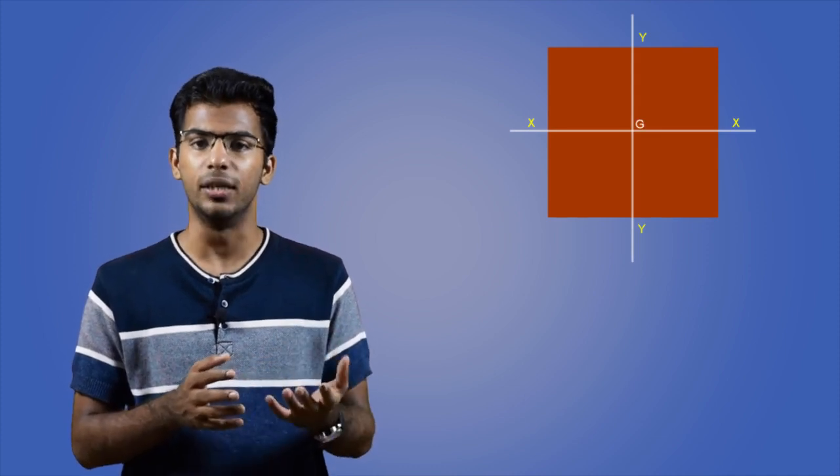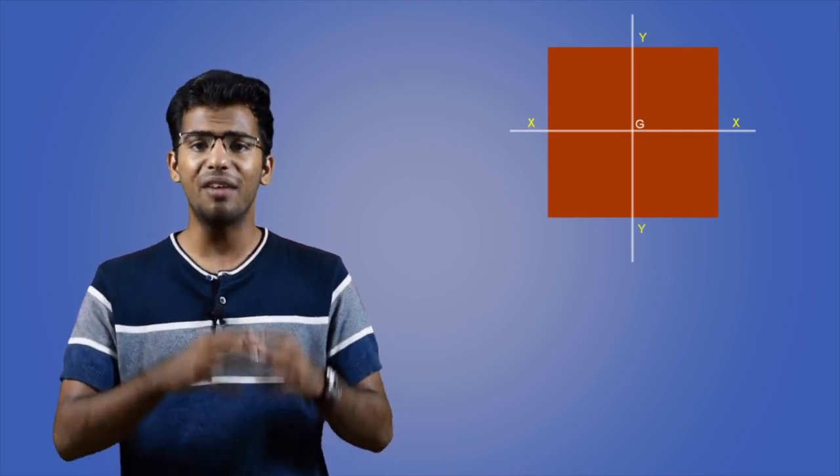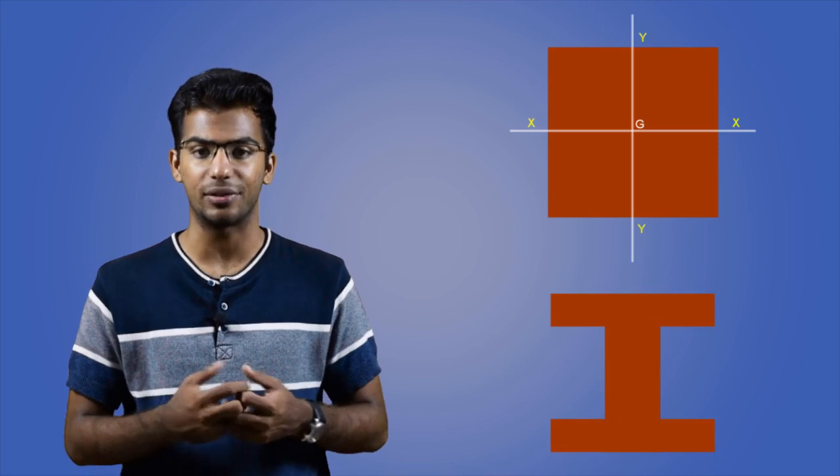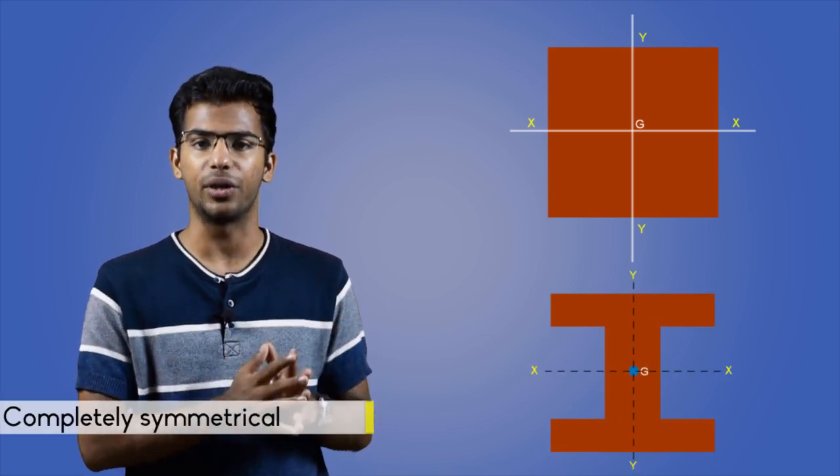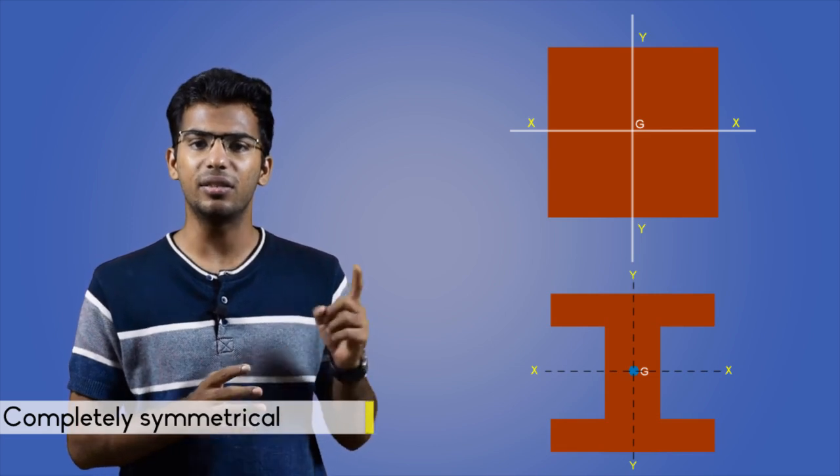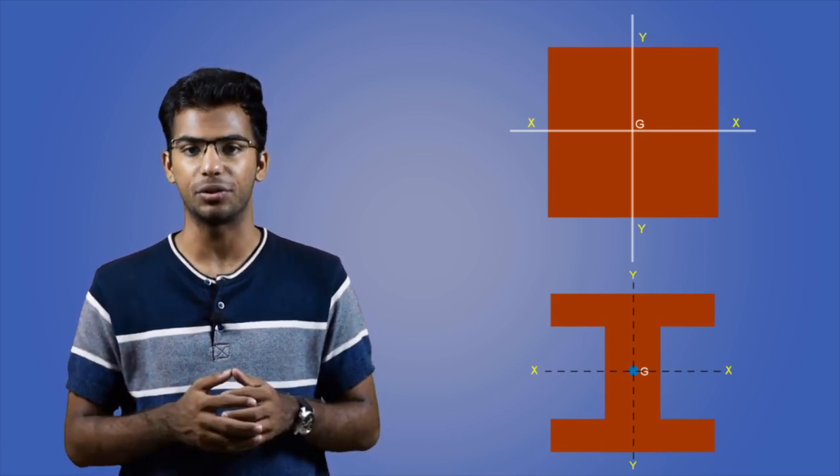Now moving on to the final type, the symmetrical axis. This axis divides the whole figure into equal parts. The part of figure to the left and right of this axis will be identical. We have different types of symmetrical axis. Number one: completely symmetrical. The figure is symmetrical in both x and y directions.